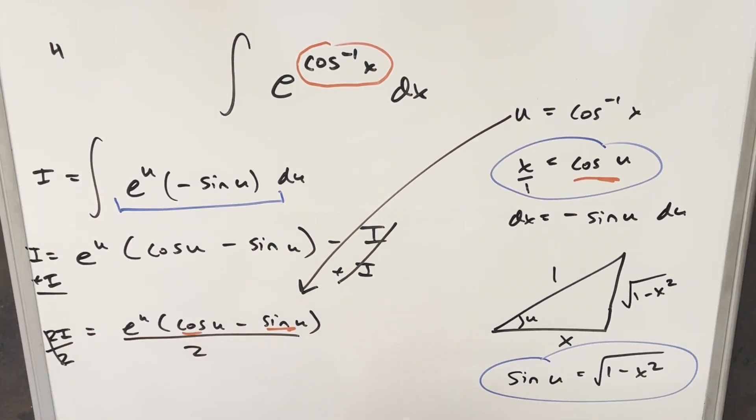So now that we have all the values we need, I'm ready to back substitute in order to finish this off. So we're going to have e to the u, which is our cosine of x. Then here we're going to have cosine of u, which is x minus this thing, square root of 1 minus x squared, all over 2, add a plus c, and that's it.